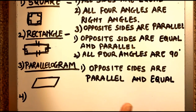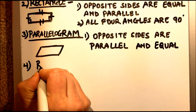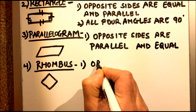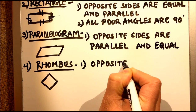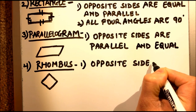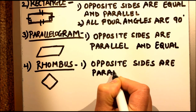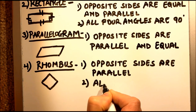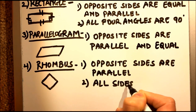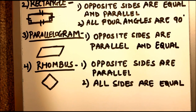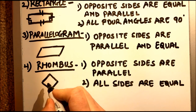Next comes the rhombus. A rhombus is a shape in which opposite sides are parallel to each other and all sides are equal. The difference between a square and a rhombus is that in a square all angles are 90 degrees, whereas in a rhombus the angles are not 90 degrees.